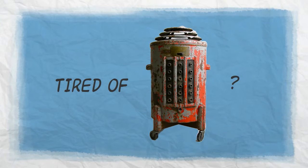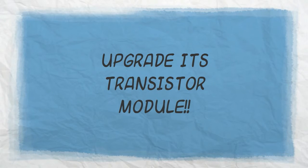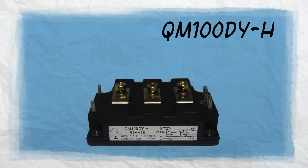If you're tired of using your old-fashioned welding machine, no need to buy a new one. All you have to do is upgrade its transistor module. In this case, you'll want QM100DYH.